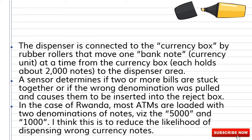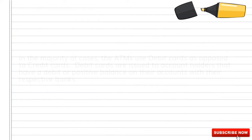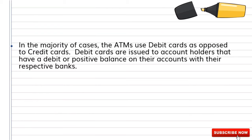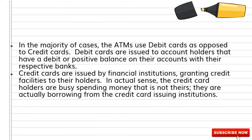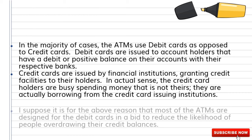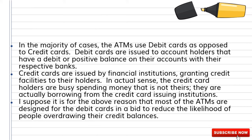Most ATMs are loaded with two denominations of notes — the five thousand and one thousand — to reduce the likelihood of dispensing wrong currency notes. In the majority of cases, ATMs use debit cards as opposed to credit cards. Debit cards are issued to account holders with a positive balance, while credit cards grant credit facilities, meaning holders are spending borrowed money.